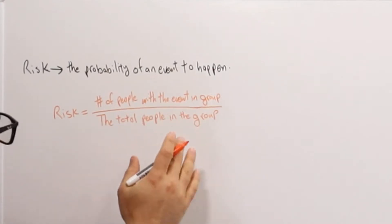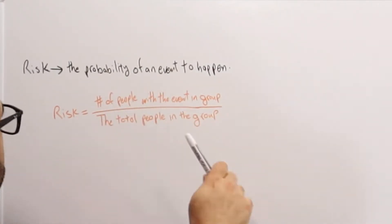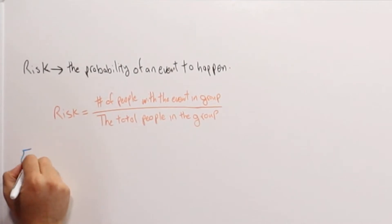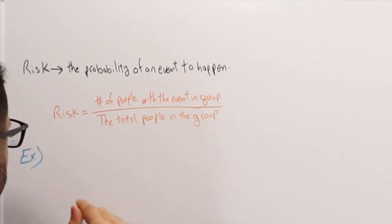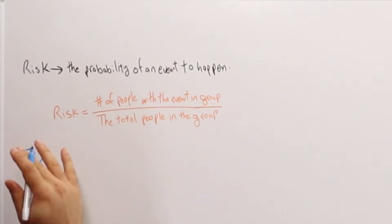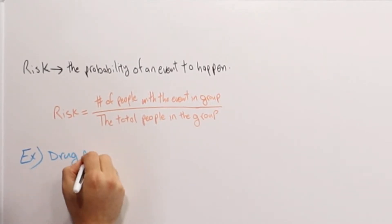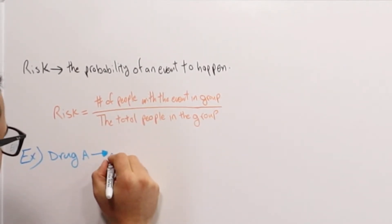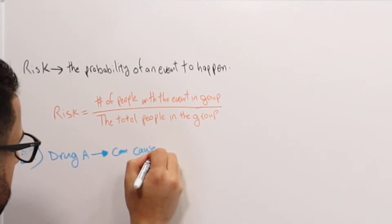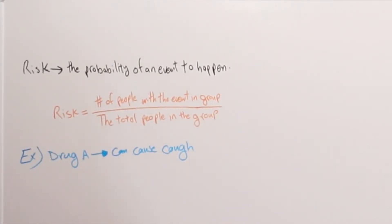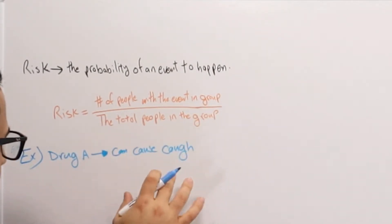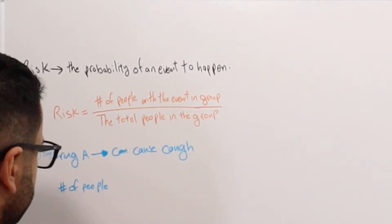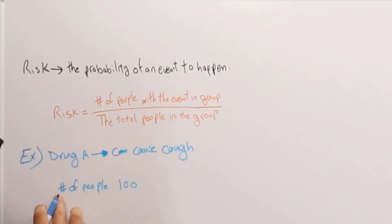So what we're trying to do is take the number of people that had the event. Let's take an example: say we have patients taking a new medication called Drug A. This Drug A is known to cause cough. We're trying to see the risk in the group. I'm just going to pick some simple numbers to make it easy to understand — we have 100 people total.